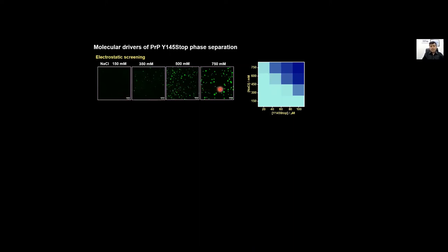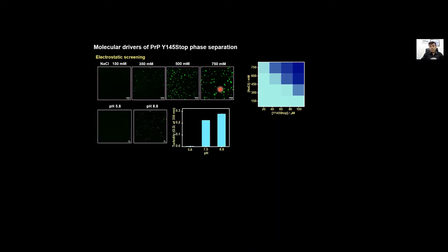We wanted to study the molecular drivers of phase separation of 145 stop fragment. As we increase the salt concentration we see more and more condensate. This is due to the fact that higher salt concentration screens the polypeptide charges, and that allows the polypeptides to come together and interact via different non-covalent interactions like hydrophobics and cation-pi and so on. Electrostatic screening seems to be very critical for this fragment and that's also indicated by the pH responsive phase separation as well. If you go down to pH where the positive charge increases then we don't see any phase separation.